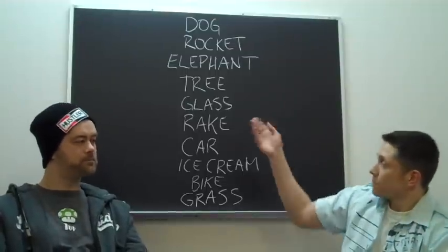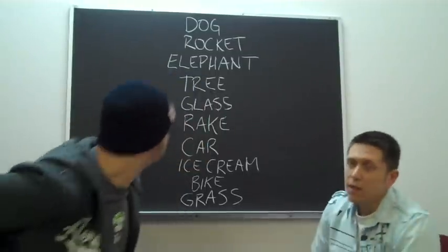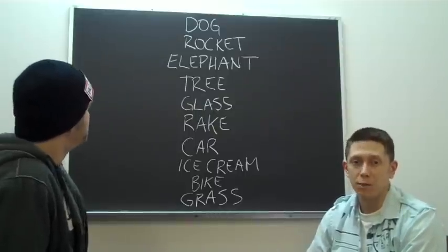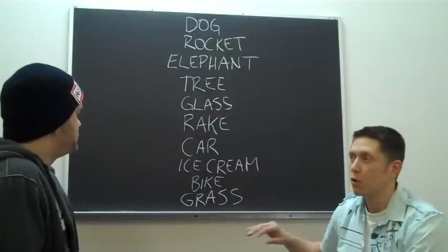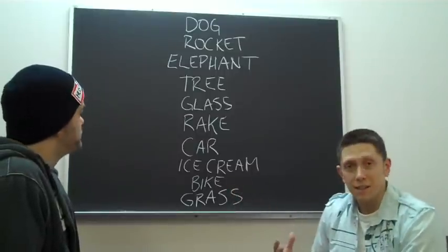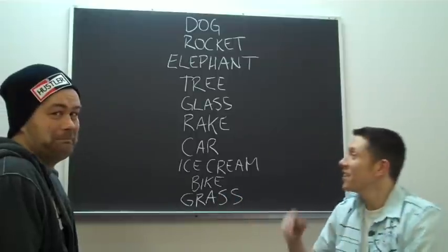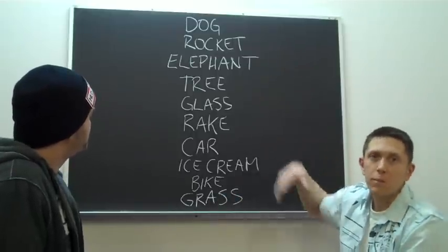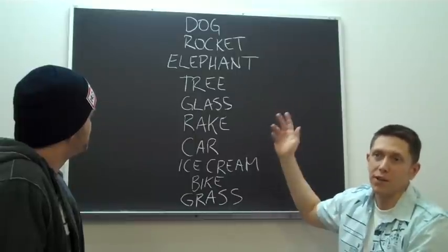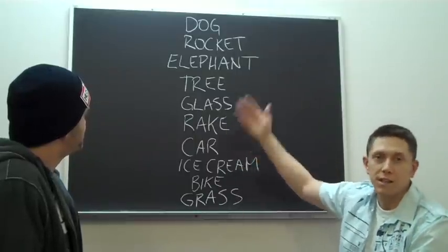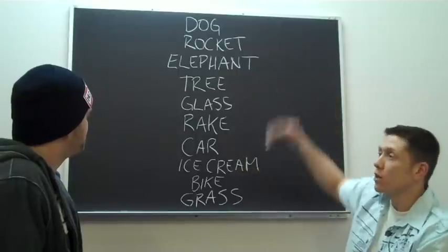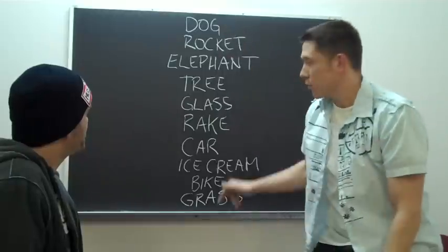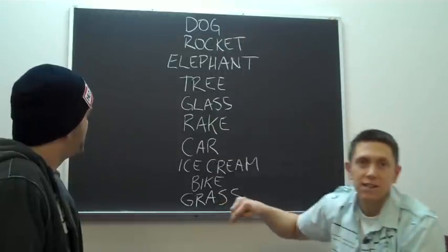The idea is that each item is something common to our everyday world — I didn't pick any obscure words. So these are things Brad has seen and experienced in his life. What you want to do to memorize this list is to tell yourself a story from the top down to the bottom, with these things interacting in real life.